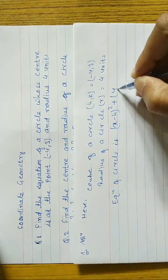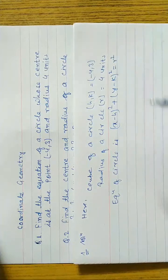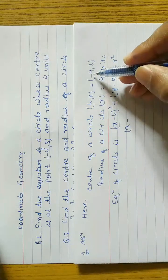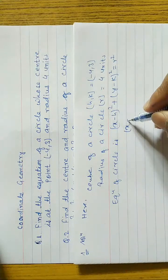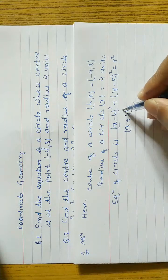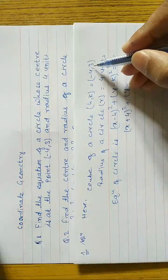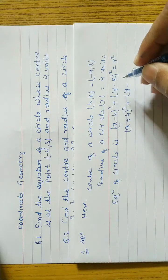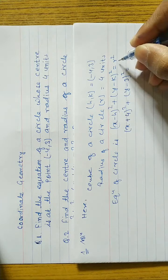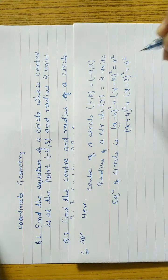whole square plus y minus k whole square is equal to r square. So we can write here: x minus h — h is equal to -4 — so minus and minus gives plus. We can write (x + 4) whole square plus (y minus k) — k is equal to 3 — so (y - 3) whole square is equal to r square. Radius is equal to 4, so we write 4 whole square.